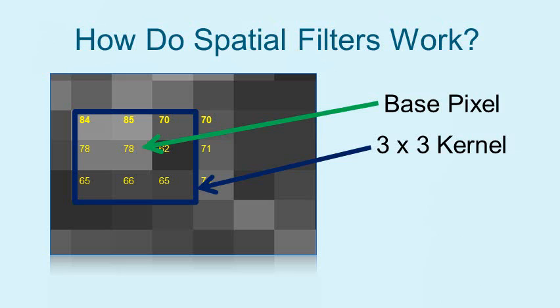Because spatial filters are local operations, the surrounding pixels that will be used to determine the new value has to be defined. This is done through the use of a moving window, also known as a kernel or operator. The kernel, generally containing some type of weighting coefficients, is placed such that the base pixel sits at its center. All the pixel values that fall within the kernel are used to calculate the new pixel in association with the kernel's weighted coefficients.